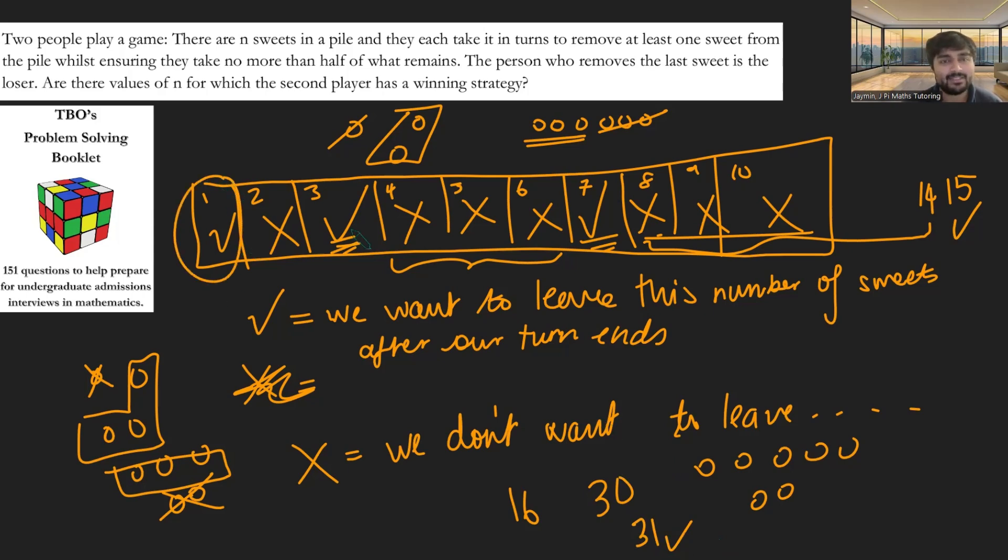And we can maybe spot a pattern in these numbers. One, three, seven, 15, 31. They are all of the form two to the n minus one, where n is a positive integer. This is quite interesting. So you can actually prove this. I'll maybe leave it as an exercise to you to prove this. It's not too difficult based on the observations we've made, but you can prove that any square that's of the form two to the n minus one is a good square.